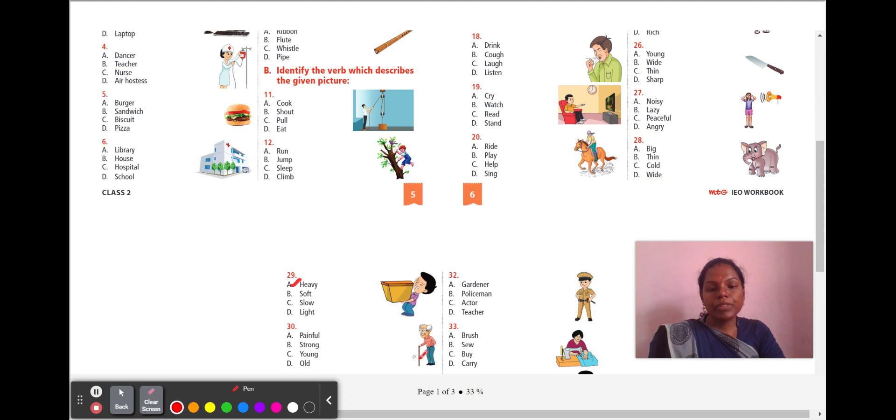Next, 30th question. There is an old man with a walking stick. What is the adjective that suits him? A, painful. B, strong. C, young. D, old. The old man is old. And the answer is old.